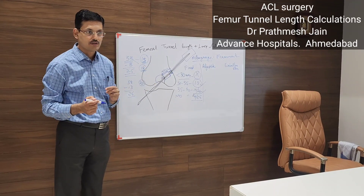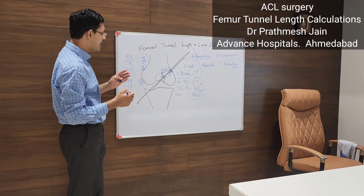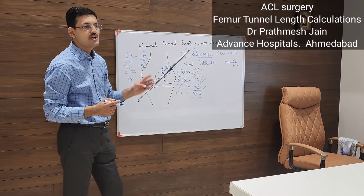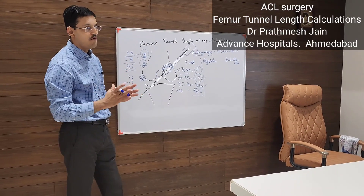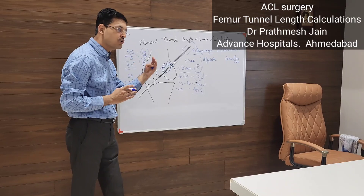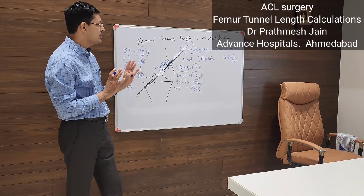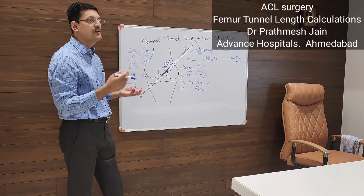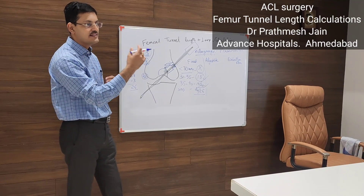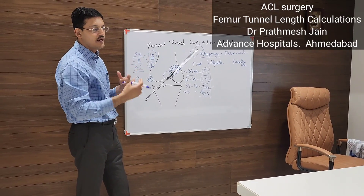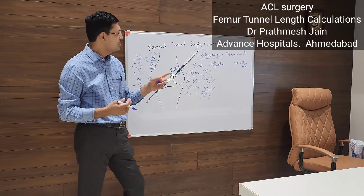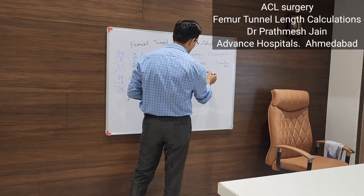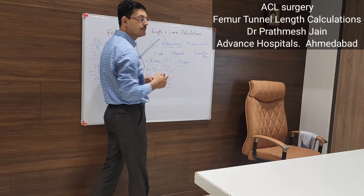For an adjustable loop, you simply calculate how much graft you want inside the tunnel. Suppose you want 20 mm of graft inside the tunnel, and your graft length is around 7 cm with 2 cm inside. You just drill 20 mm — that's it. No complex button size calculation is needed.